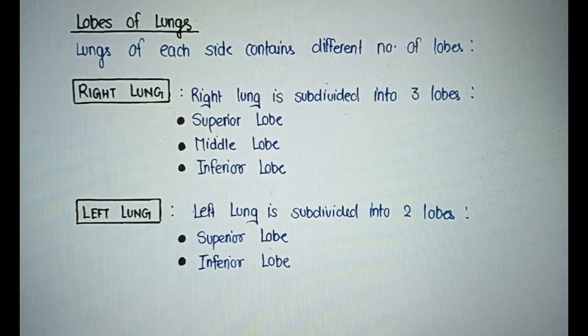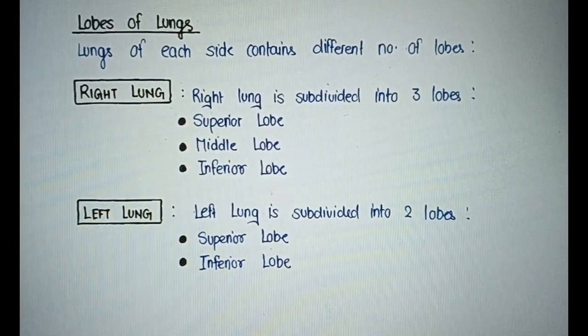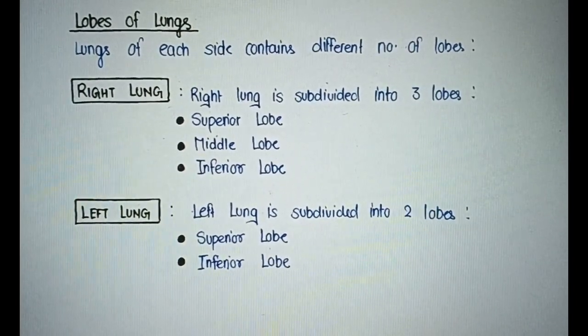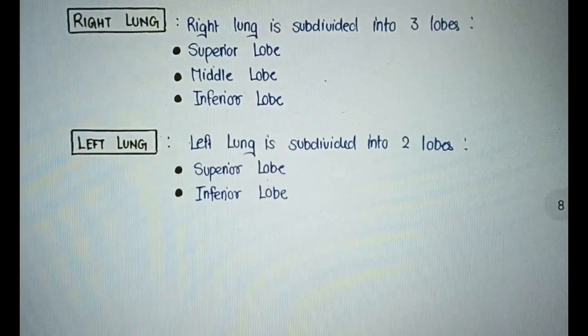Lobes of lungs. Each side contains different numbers of lobes. The right lung is subdivided into three lobes: superior lobe, middle lobe, and inferior lobe. The left lung is subdivided into two lobes: superior lobe and inferior lobe.